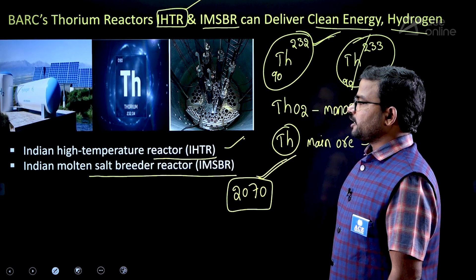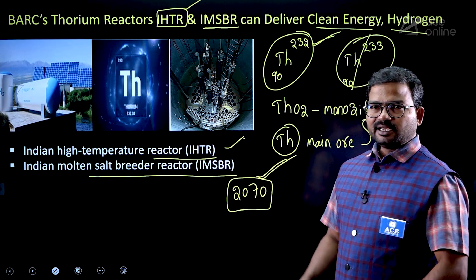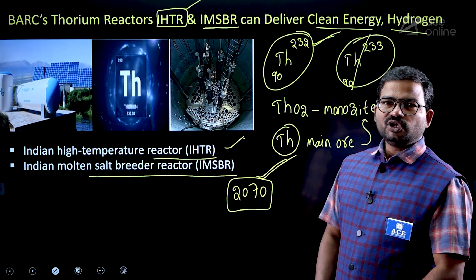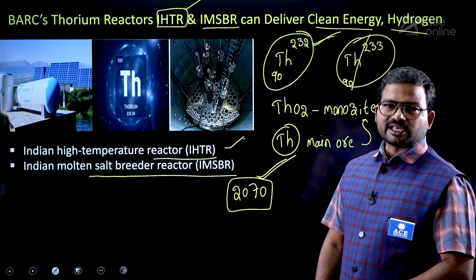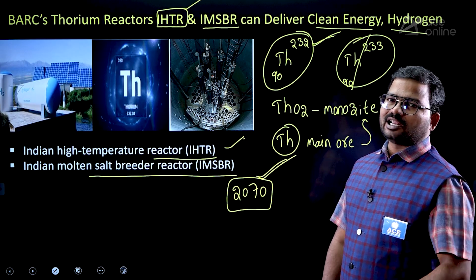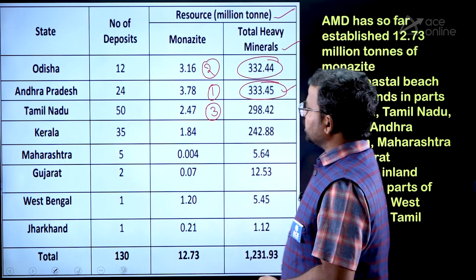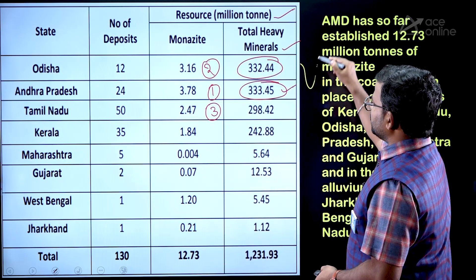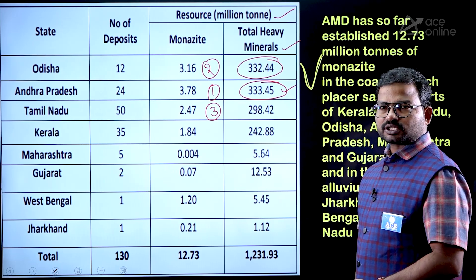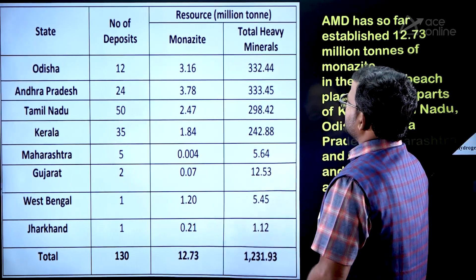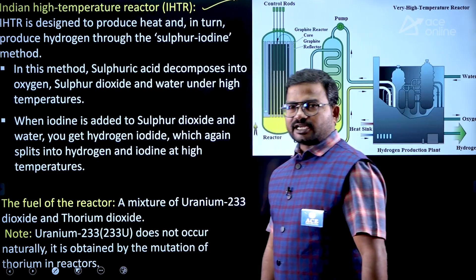The Indian High Temperature Reactor, and also the Molten Salt Breeder Reactor, differ from normal reactors. Thorium-based reactors are able to achieve clean energy production — specifically hydrogen production. Most of India's coastal regions have thorium available in sea sand. These reactors can generate a high amount of heat.